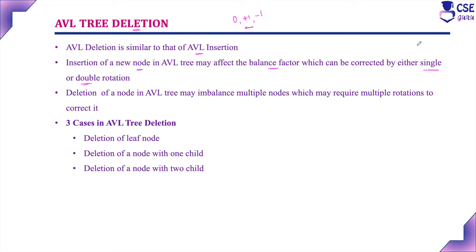Single rotation has two types: left rotation and right rotation. Double rotation also has two types: left-right rotation and right-left rotation. Left-right rotation means first implementing a left rotation followed by a right rotation; right-left rotation means first implementing a right rotation followed by a left rotation.